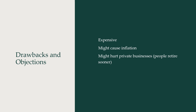Drawbacks and objections to expanding Social Security: it's expensive — Social Security already accounts for about 22% of the federal budget. It might cause inflation, and if people retire sooner, that could potentially hurt businesses.